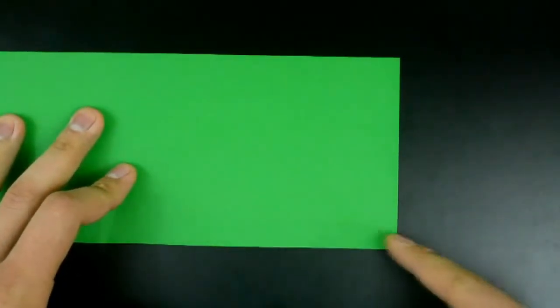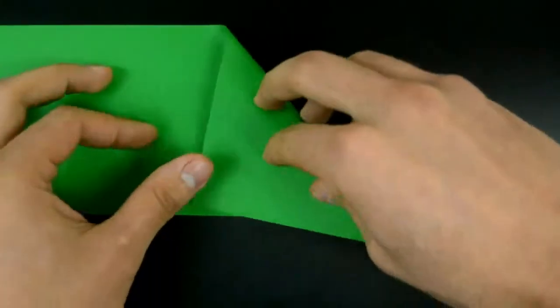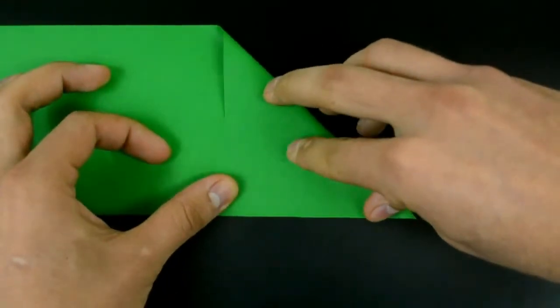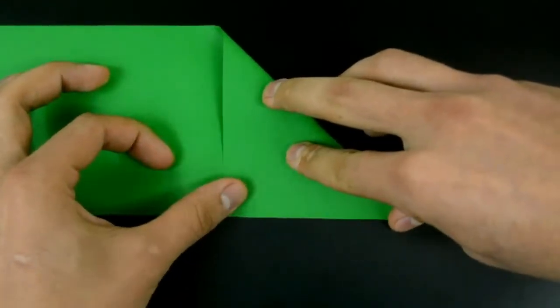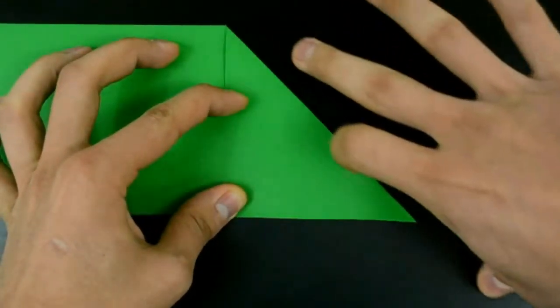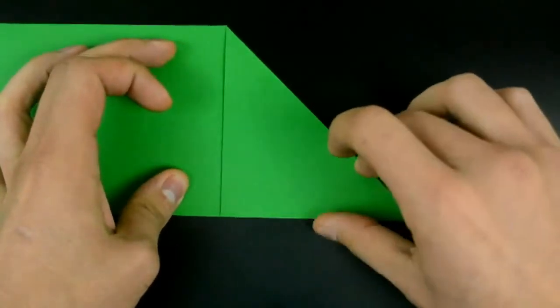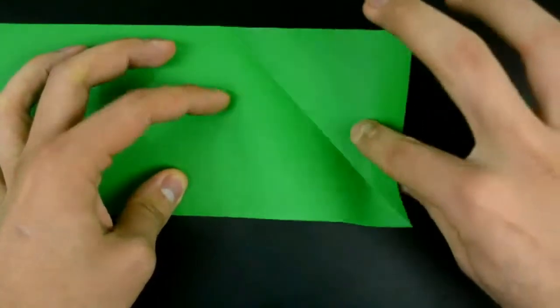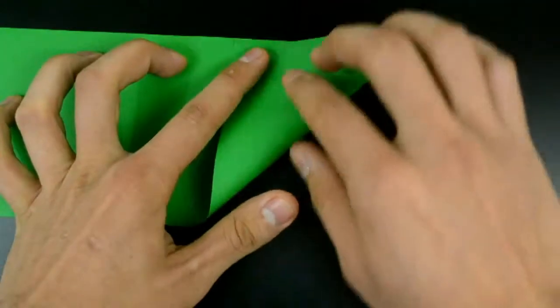Let's fold the larger one first. On the right side, bring the edge to the bottom and make a diagonal crease. Now bring the edge to the top and make a crease again.